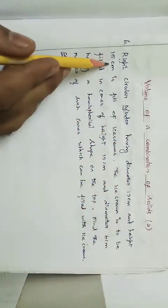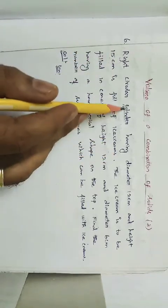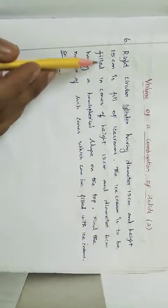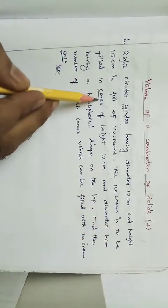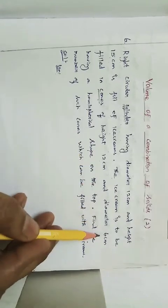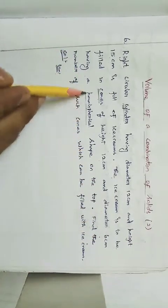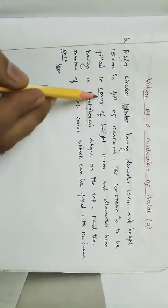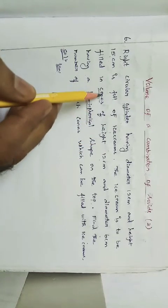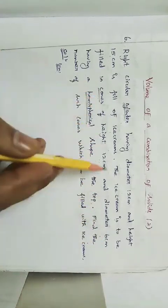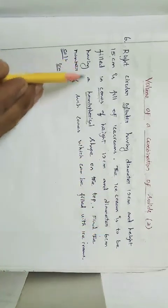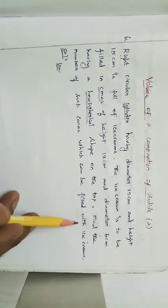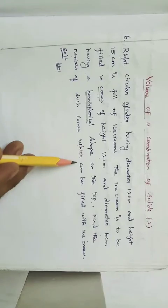The cylinder has diameter 12 centimeter and height 15 centimeter and is full of ice cream. The ice cream is to be filled into cones of height 12 centimeter and diameter 6 centimeter, having a hemispherical shape on the top.